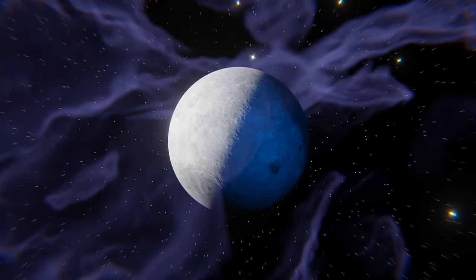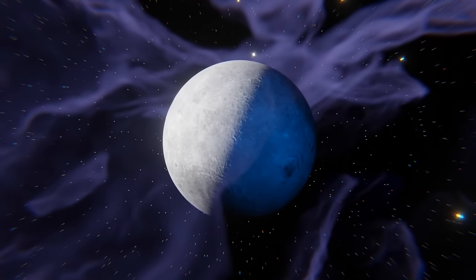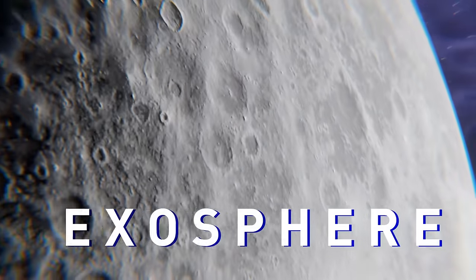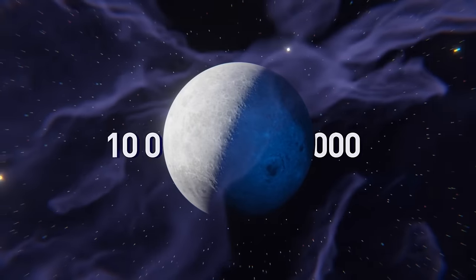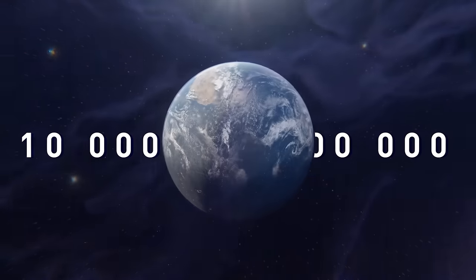By the way, our Moon also has some sort of an atmosphere. Called an exosphere, it consists of helium, neon, and argon. It's 10 trillion times less dense than Earth's atmosphere.